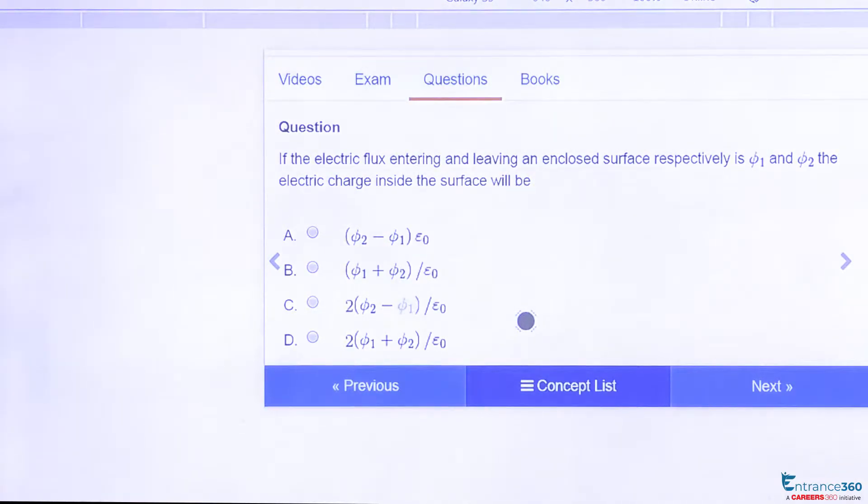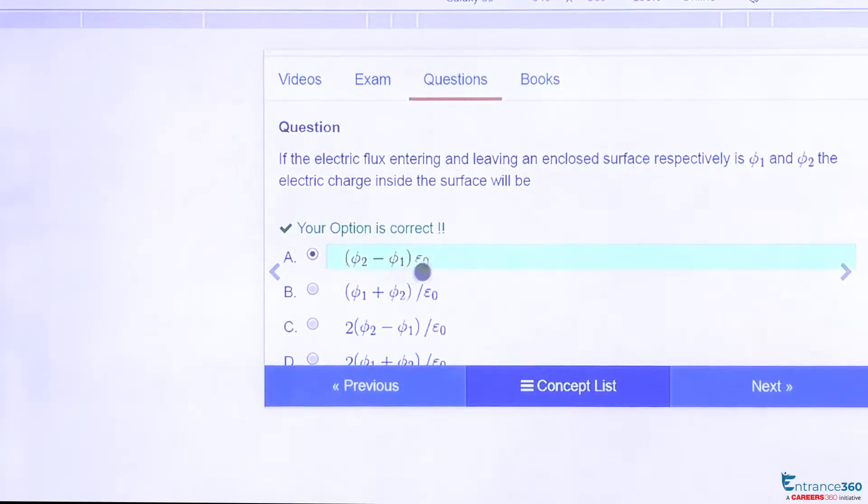After solving the question we get our answer as option A. The net charge will be phi2 minus phi1 times epsilon.